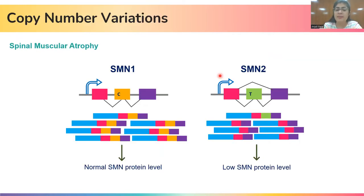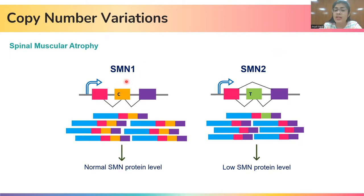The second example is copy number variation in the case of spinal muscular atrophy. SMA is caused due to mutations in the SMN1 gene that produce SMN protein — the spinal motor neuron protein. In the normal scenario, there are two genes that make SMN protein: SMN1 and SMN2. Most of the SMN protein is formed from the SMN1 gene and only a small amount, about 10%, is formed from the SMN2 gene. The copy number of SMN2 gene can vary between 2 to 8 copies in different individuals.